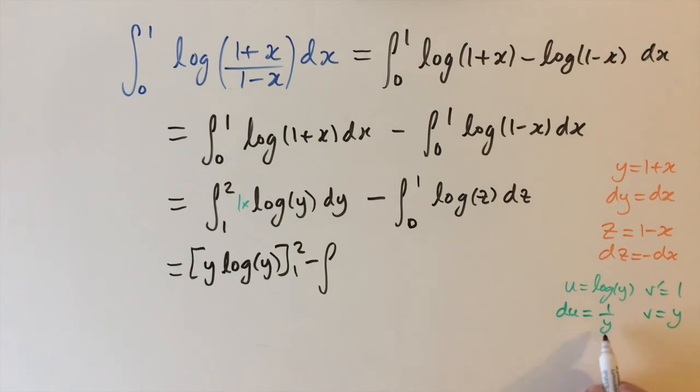Minus the integral of v du. So this bottom row. So we have y times 1 over y which is just 1. So 1 dy and the limits of 1 and 2.